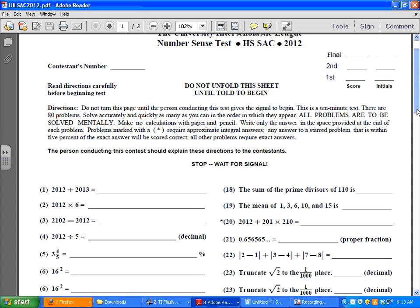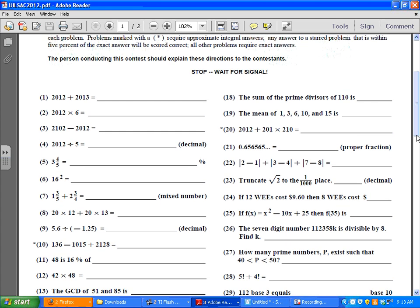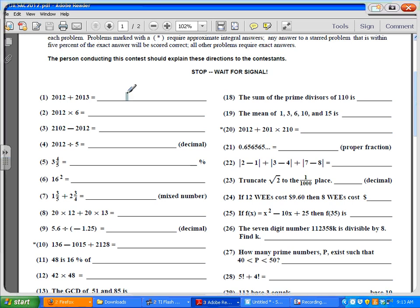And number one is 2012 plus 2013. Well, 2000 plus 2000, that's going to be 4000. So I'm going to have 4012 plus 13, that's 25. So that's 4025.